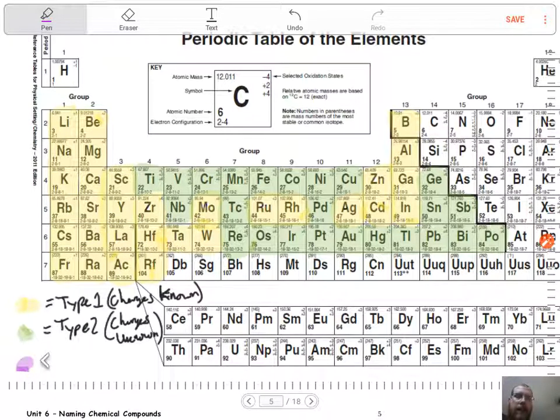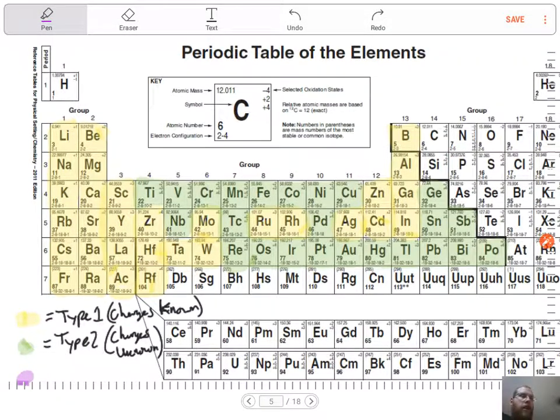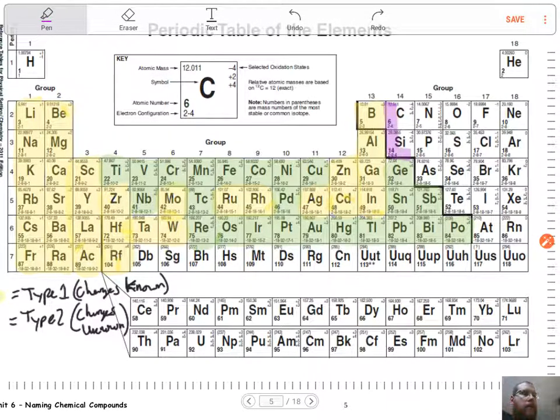And then the last ones are going to be our non-metals. Notice they can have multiple charges. They can be forced sometimes to bond or kind of gain or lose more electrons. We're not going to be worried too much about that right now. We're just going to go with their first charge. When we get into oxidation and reduction later on in the year, that's where we can talk about all those other charges.